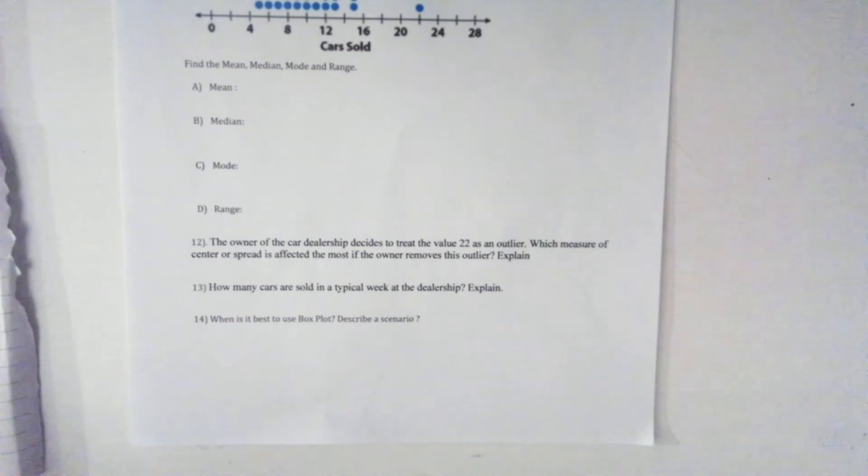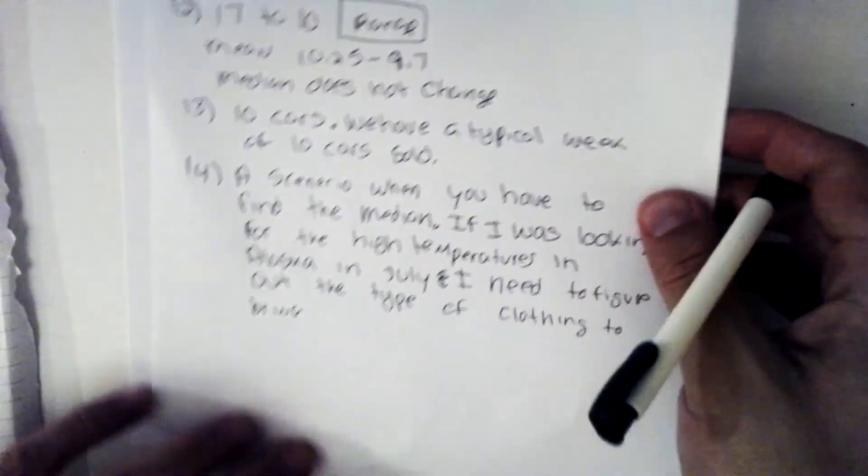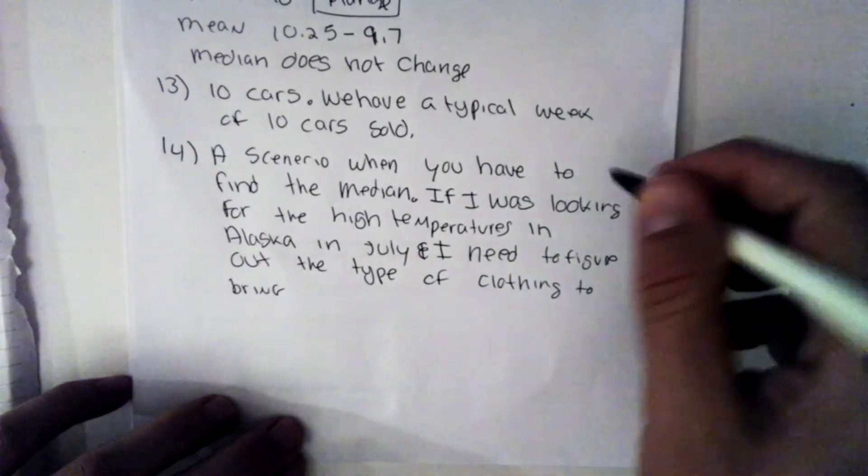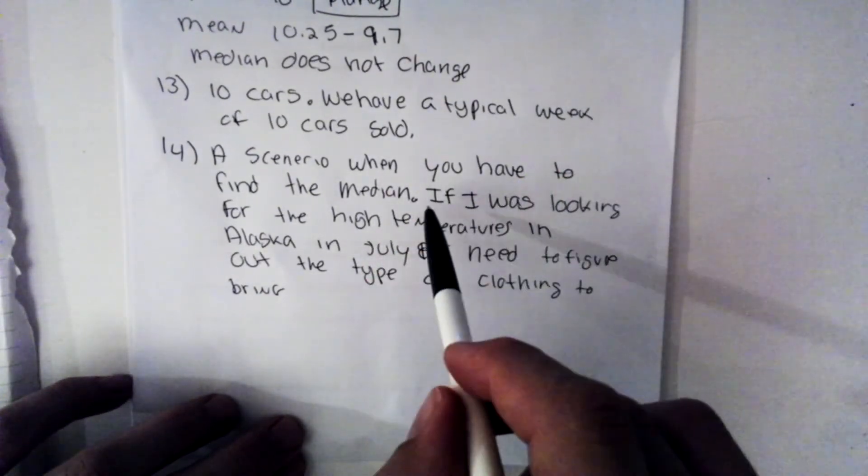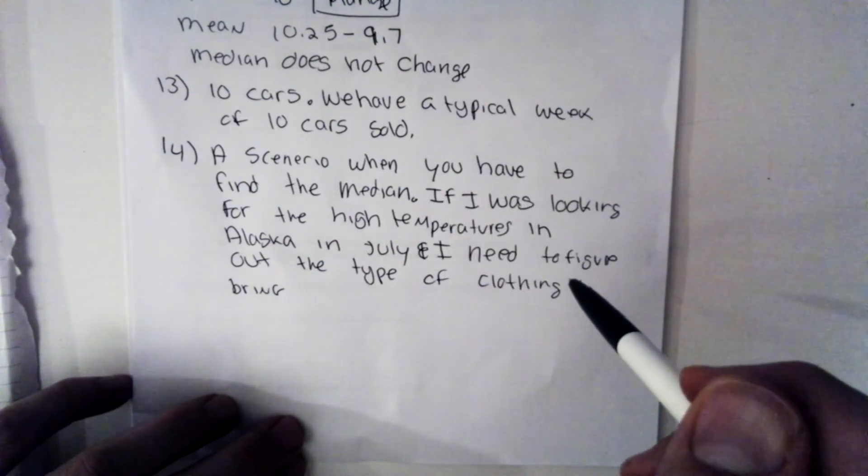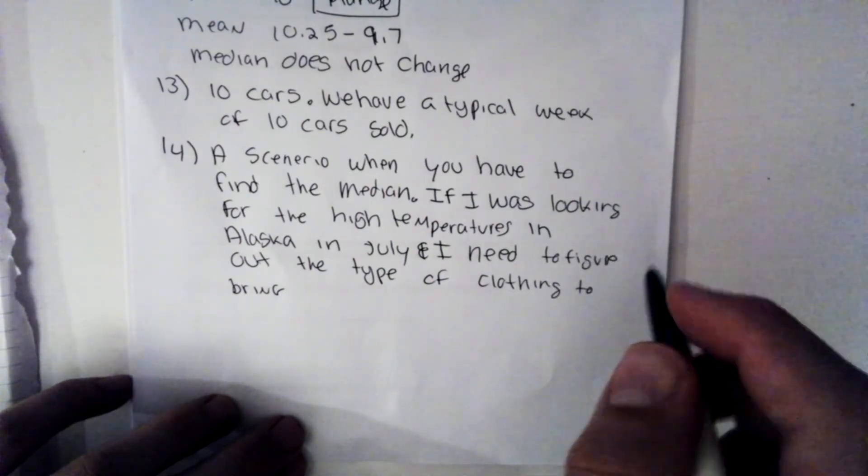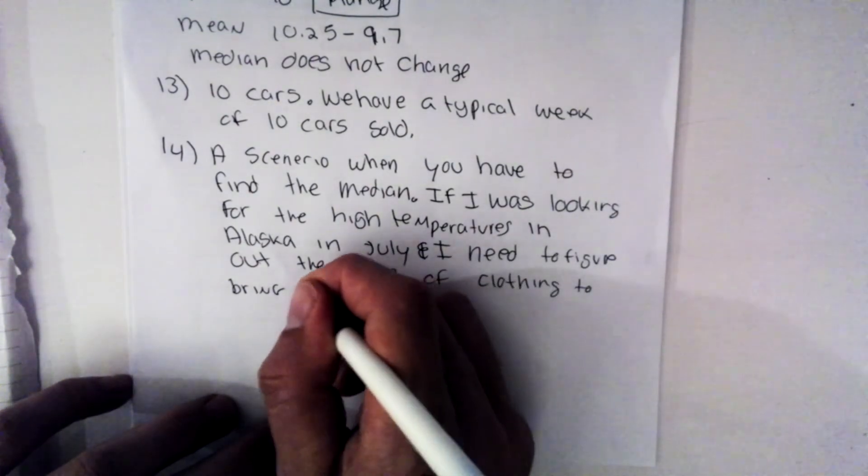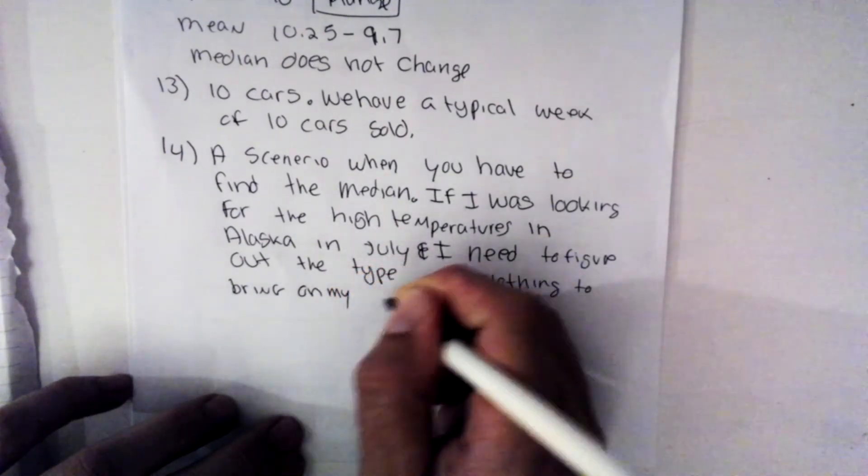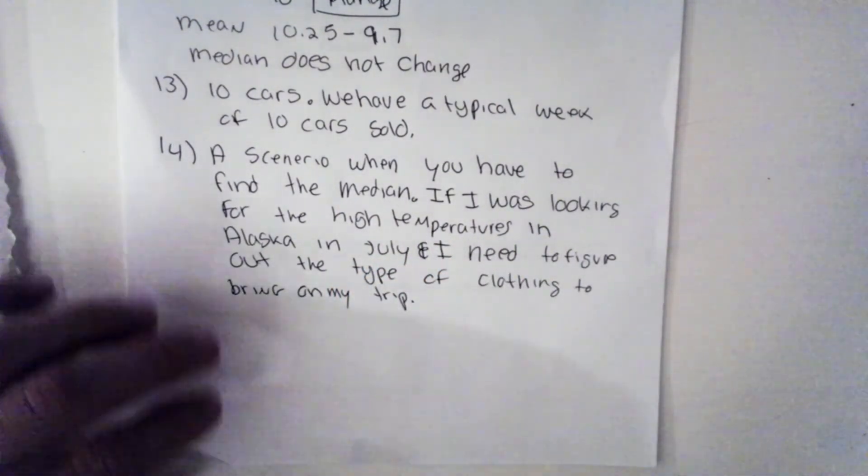When is it best to use a box plot? Describe a scenario. So it's best to use a box plot when you're finding the median. So a scenario is when you have to find the median. If I was looking, I said, if I was looking for high temperatures in Alaska in July, and I need to figure out the type of clothing to bring on my trip when I was traveling there. So that's when I would use a box plot to find the median.